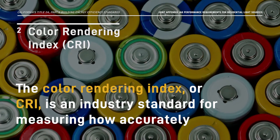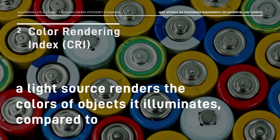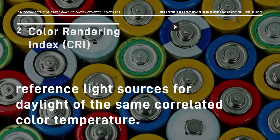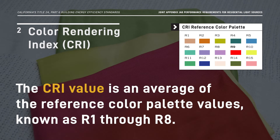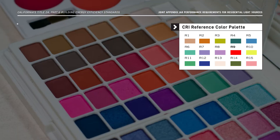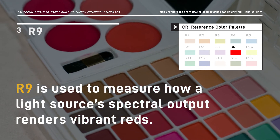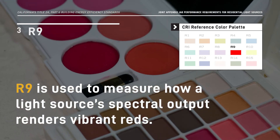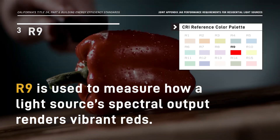The Color Rendering Index, or CRI, is an industry standard for measuring how accurately a light source renders the colors of objects it illuminates compared to reference light sources for daylight of the same correlated color temperature. The CRI value is an average of the individual reference color palette values known as R1 through R8, and the maximum CRI value is 100. The reference color palette R9 is used to measure how a light source's spectral output renders vibrant reds — an important consideration when illuminating items with natural reds, including some skin tones, food, and wood.